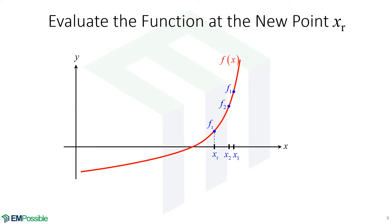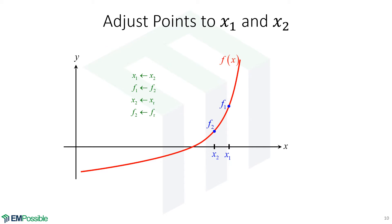So we'll evaluate the function at this new root. And at that point, we can discard that first point and then rename our point. So this new root that we calculated becomes our new x2. And our new x1 is the old x2.